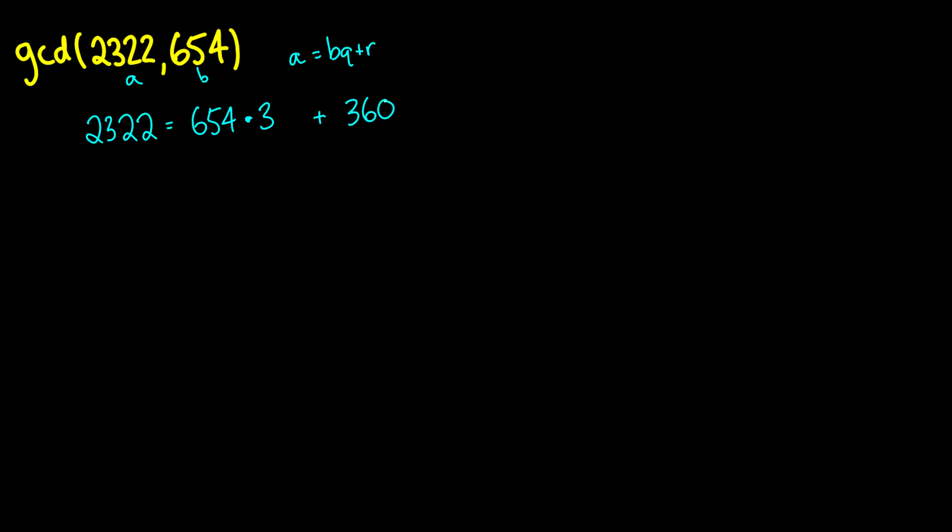And if you multiply this out and subtract it from 2322, you will get 360 as your remainder. I did the math ahead of time, so unfortunately I won't be doing the long unnecessary arithmetic. So now, according to the algorithm, this means that this GCD is going to be the same thing as the GCD of 654 and 360.